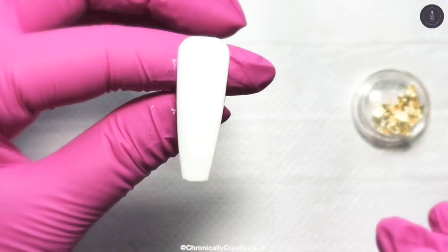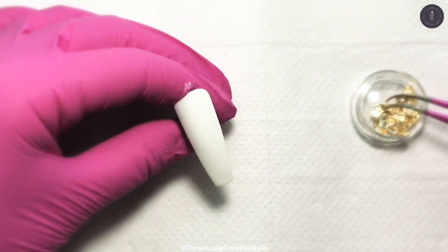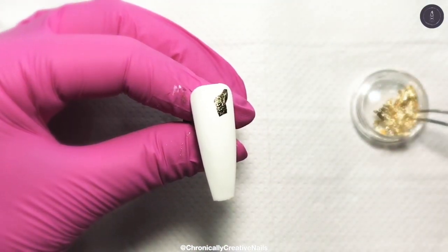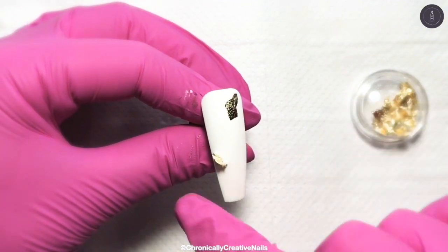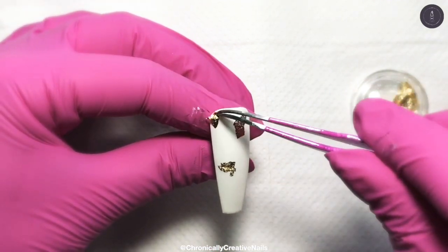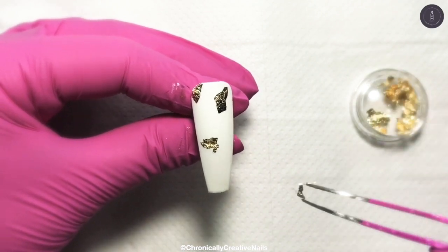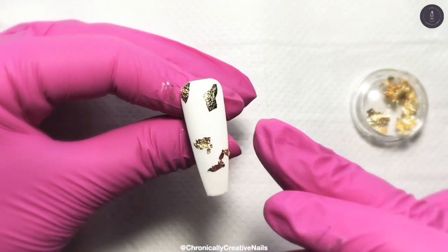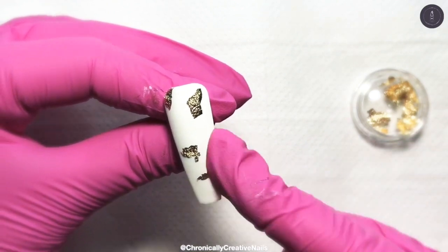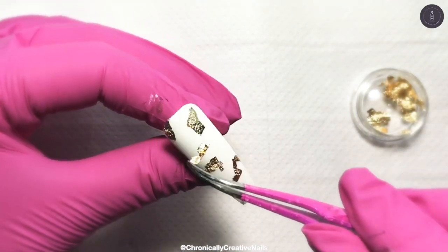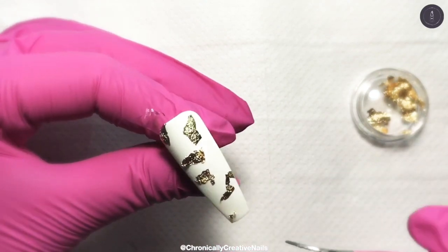There we go. So that's them done. Now I'm onto the white nails. So I'm just going to add some of the gold leaf into the base coat dispersion layer again. So I do two nails like this. I've only filmed the one.